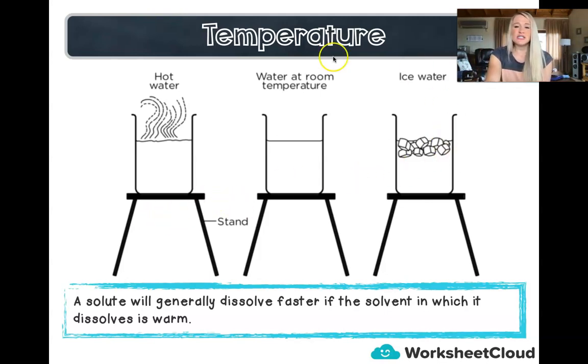This is just a diagram to show you three different beakers. We've got a beaker filled with ice water, a beaker with water at room temperature, and a beaker with hot water. The picture clearly shows it is hot because there's steam coming off the water. A solute will generally dissolve faster if the solvent in which it dissolves is warm.